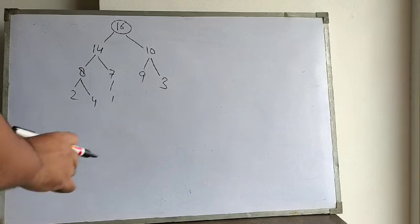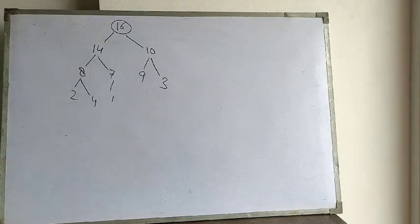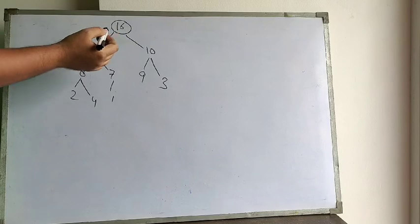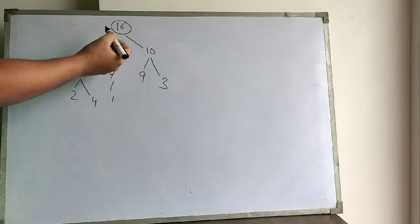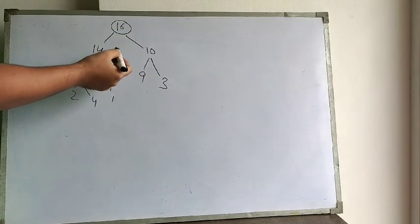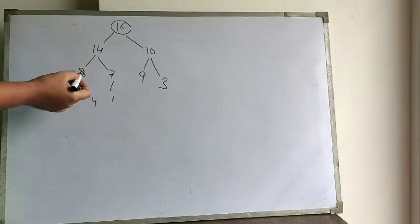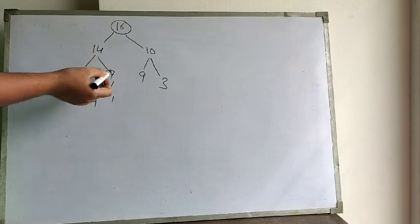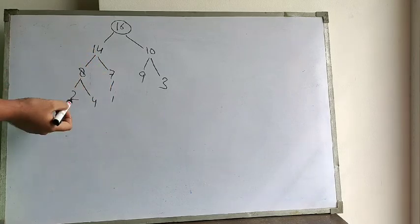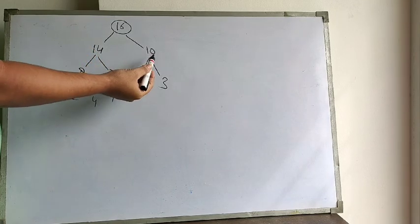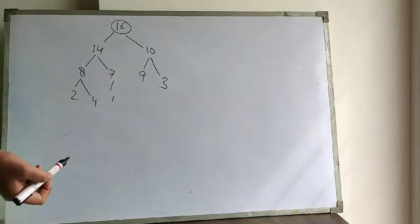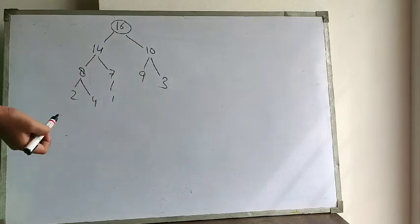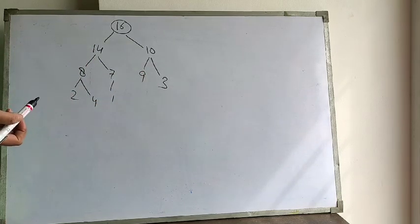This is our max heap. Every root element is greater than its child elements: 16 is greater than 14 and 10, 14 is greater than 8 and 7, 8 is greater than 2 and 4, and 10 is greater than 9 and 3. This is our max heap and we want to do a heap sort over it.